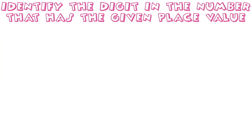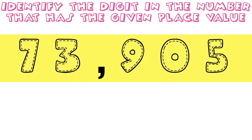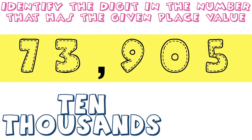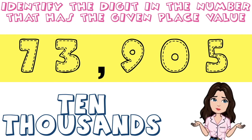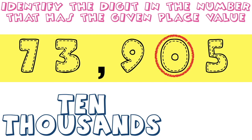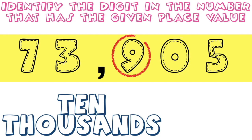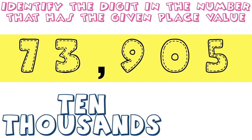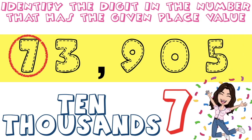How about if we have 73,905? What is the digit in the ten thousands place? Let's do it together. Speak louder. Starting from the right: ones, tens, hundreds, thousands. So digit 7 is in the ten thousands place.